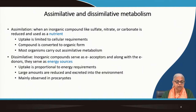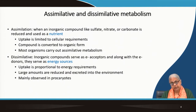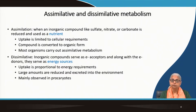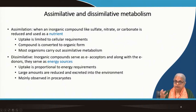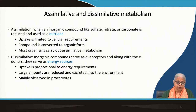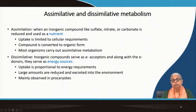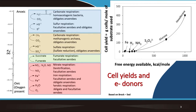Then we come to dissimilative metabolism. In dissimilative metabolism, inorganic compounds are not serving as nutrients — they are serving as electron acceptors along with electron donors. The coupling of electron donors with electron acceptors is where you get a release of energy, and that is dissimilative metabolism. This uptake is no longer proportionate to the cell requirement; it is proportionate to the energy requirement. Large amounts of the end products of these reactions are going to be excreted into the environment. This is typically seen in prokaryotes or bacteria.